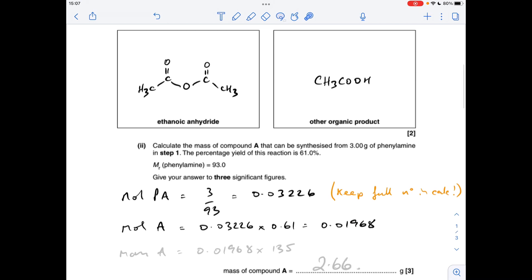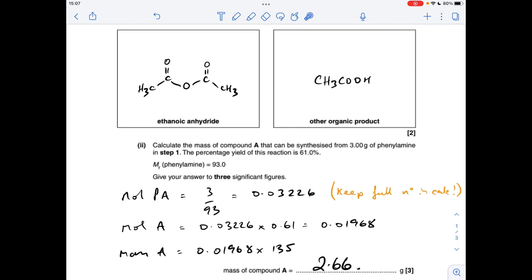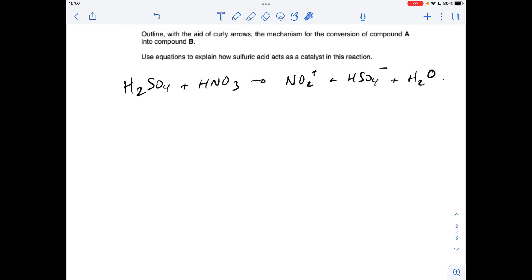And then all I need to do is multiply the moles of A that we're going to get by its Mr. And to three significant figures, 2.66 grams. Moving on to the mechanism.